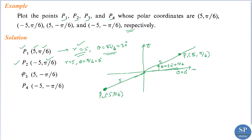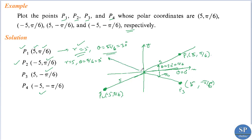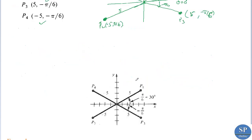To plot P3, the angle is −π/6 and r equal to 5 itself, giving the point (5, −π/6). For P4, we have (−5, −π/6): since r equal to minus 5, the point is taken in the opposite direction, placing it here. So we have P1, P2, P3, and P4 plotted. The distance is 5 for both P1 and P2, but since r equal to −5, we took P2 in the opposite direction.